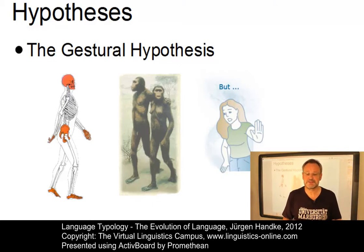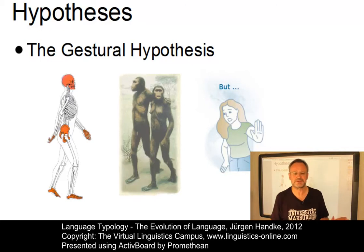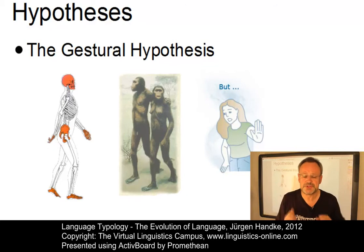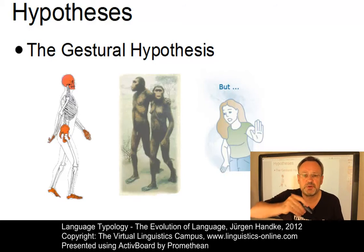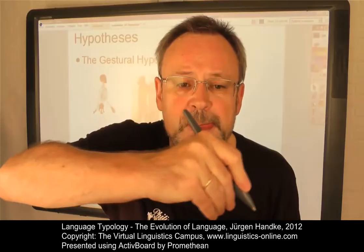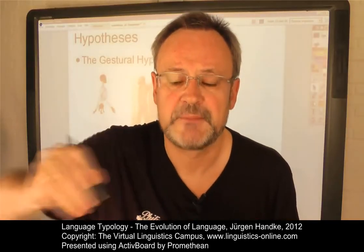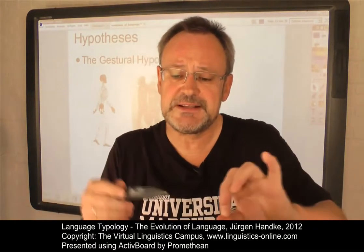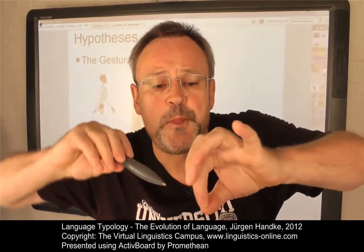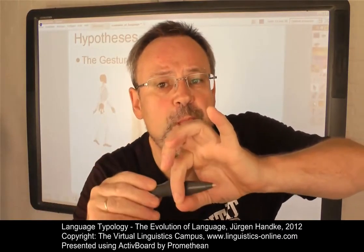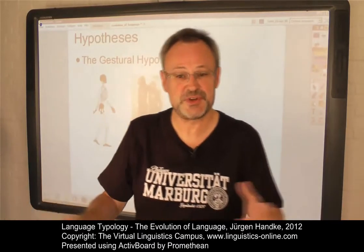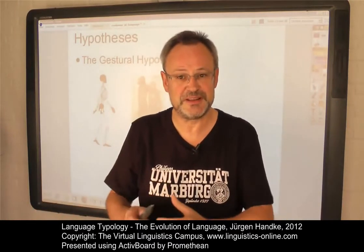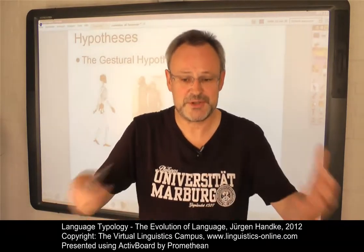One proposal is that tongue movements accompanied hand gestures. Whenever we have to perform complex tasks, our tongue supports our hands. For example, if young children write, their tongue often moves accordingly. Or if you have to thread something through a needle's eye, similar tongue movement occurs. Is this evidence for a relationship between tongue flexibility and language emergence? We may speculate.